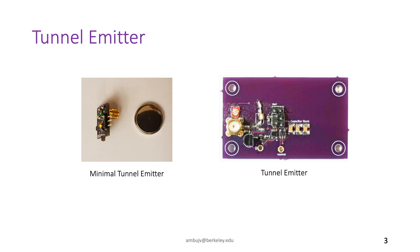We present Tunnel Emitter, an emitter device that can provide the necessary carrier signals to support backscatter transmission. Tunnel Emitter is compact, consumes microwatts of power, and can even operate on small batteries or energy harvested from the ambient environment — a capability that is challenging or infeasible for emitter devices used in existing backscatter systems. As shown in the figure, Tunnel Emitter can be smaller than a coin cell battery and, due to its low power consumption, can operate for years without duty cycling on the same battery.